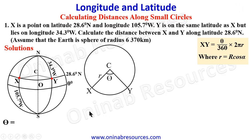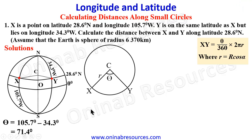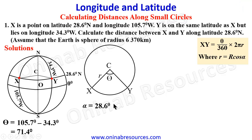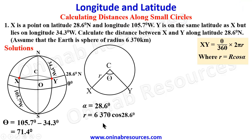To find theta: since both longitudes are in the same region (both west), we subtract — 105.7 minus 34.3 degrees — giving theta equals 71.4 degrees. Our alpha is always obtained from the common latitude, which is 28.6 degrees, so alpha equals 28.6 degrees. We can now calculate the radius of latitude 28.6 degrees.